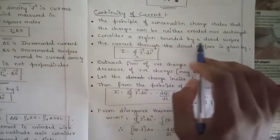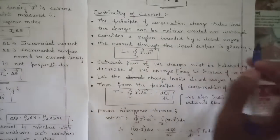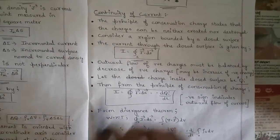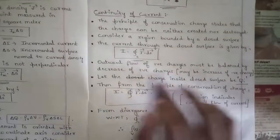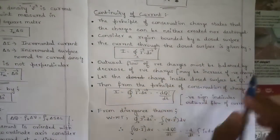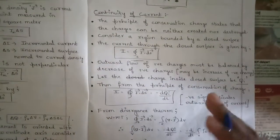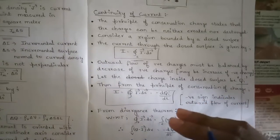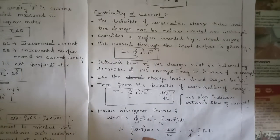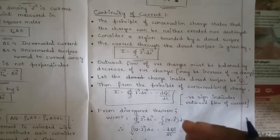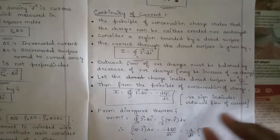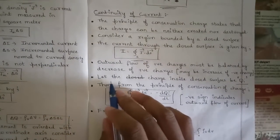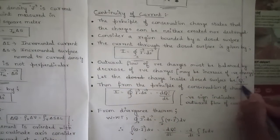Consider a region bounded by a closed surface. The current through the closed surface is given by I = surface integral of J · dS, as already proved. The outward flow of positive charges must be balanced by the decrease of positive charges inside — or equivalently, the increase of negative charges. So let the charge inside the closed surface be Q_i.